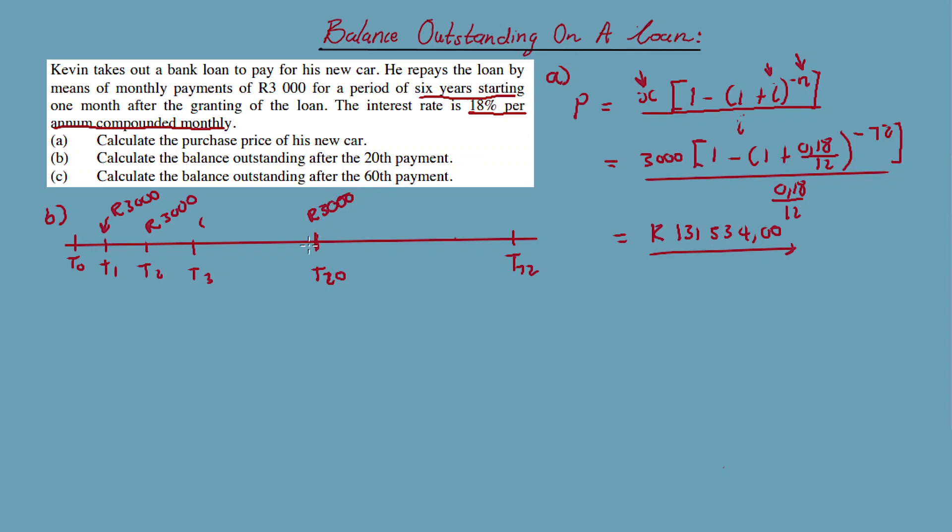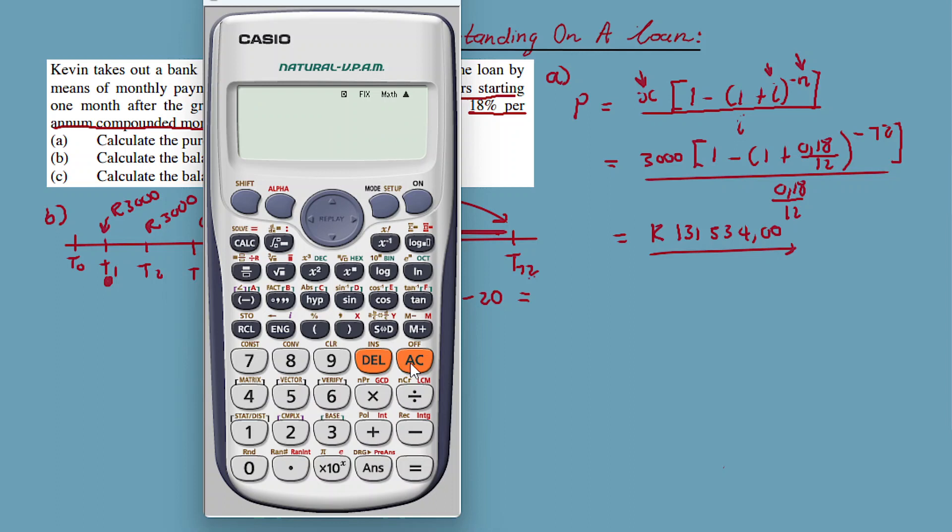When calculating the outstanding balance on a loan, this is what you do. N is equal to 72 minus 20. Remember, it's from 1 all the way up to 20. When you're calculating the outstanding balance on a loan, you need the remaining period. You need to find the remaining period to repay the loan. That's why we say 72 minus 20, which equals 52.